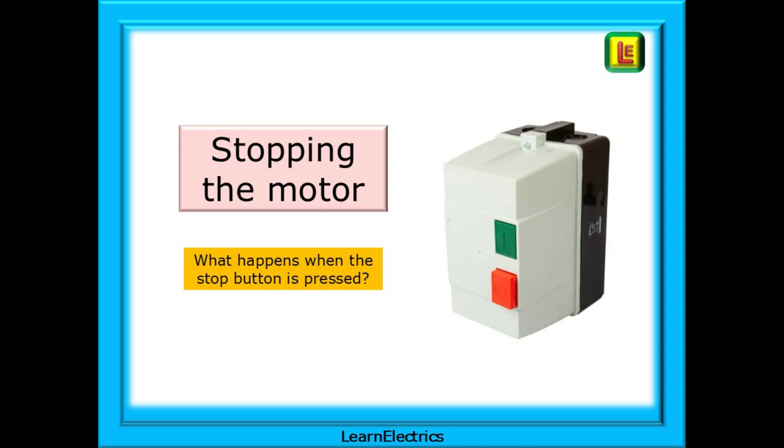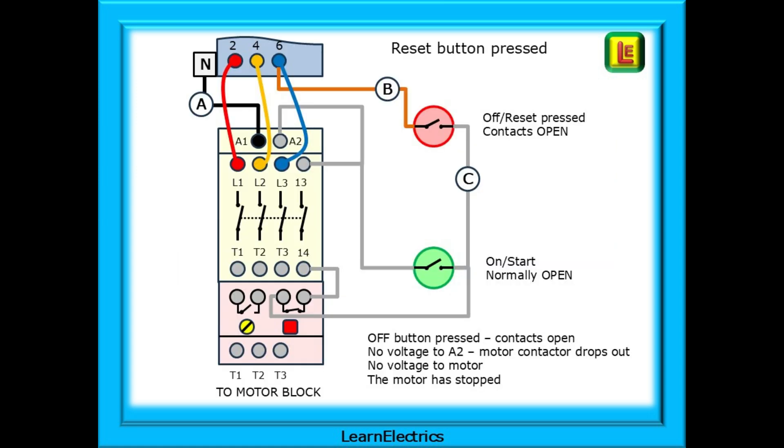Now, let's say that we wish to stop the motor. What happens when we press the off or stop button? The off button is a normally closed switch so pressing it will cause the contacts to open. What happens to the 230 volts that was passing through the switch? 230 volts remains on wire B but wire C and everything after it loses the voltage.